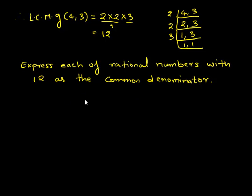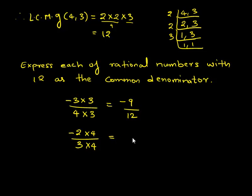First let us express negative 3 upon 4 with 12 as denominator. For that we have to multiply negative 3 upon 4 by 3 in the numerator and 3 in the denominator. We get negative 3 times 3 is negative 9 upon 4 times 3 is 12. Similarly we have to multiply negative 2 upon 3 by 4 on the numerator and 4 in the denominator. This gives negative 2 times 4 is negative 8 upon 3 times 4 is 12.